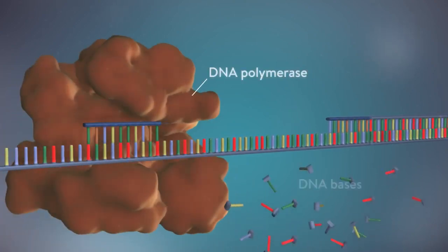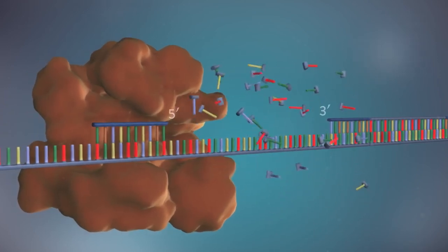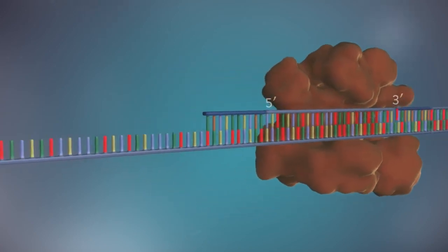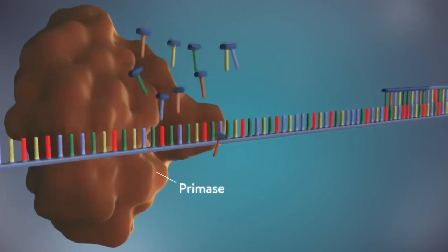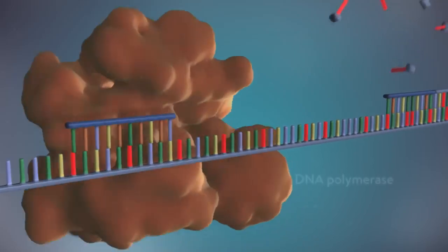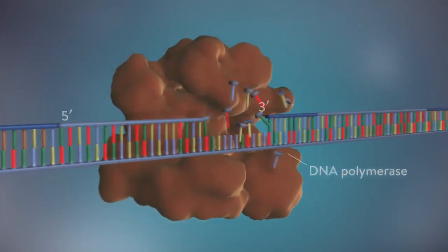DNA polymerase then adds a short row of DNA bases in the 5' to 3' direction. The next primer is then added further down the lagging strand. Another Okazaki fragment is then made and the process is repeated again.